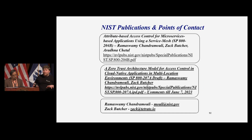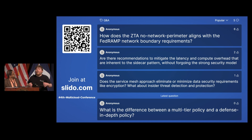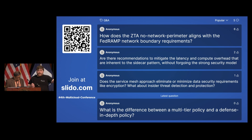Q: How does ZTA's no-perimeter approach jive with the requirement for a perimeter from things like FedRAMP? That's exactly why we're writing 207A — to help move the ball. Programs like FedRAMP might eventually start to adopt these things, but first we need to give them the space and justification. What I hope to see over time is that we start to relax or augment perimeter requirements in FedRAMP in exchange for identity-based policies, as auditors and regulators become better educated in this space.